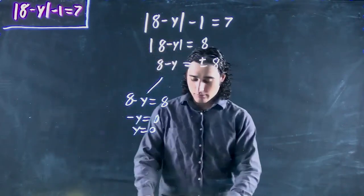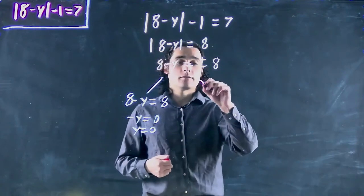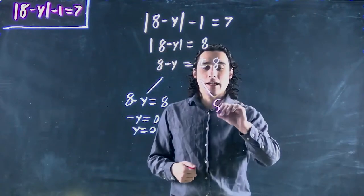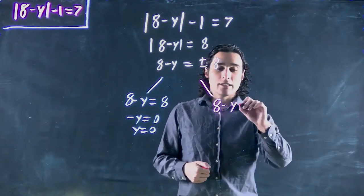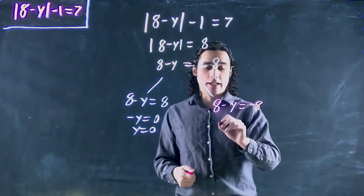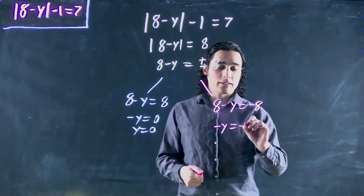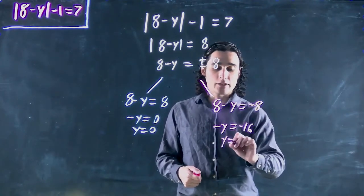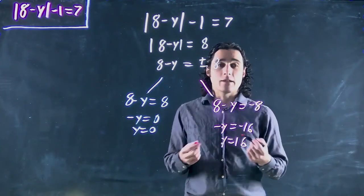Or I can look at this one and switch. What do I got? 8 minus y equals minus 8. Okay, great. So now I get minus y equals minus 16, or y equals 16, which is also a viable solution.